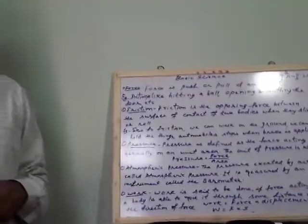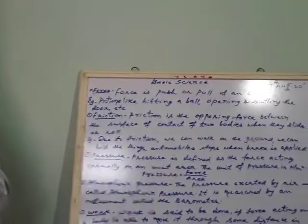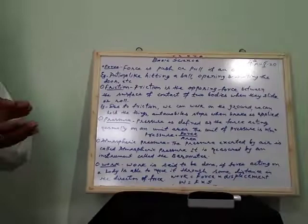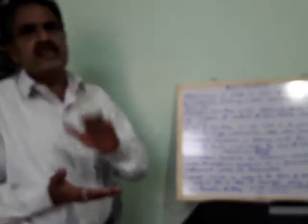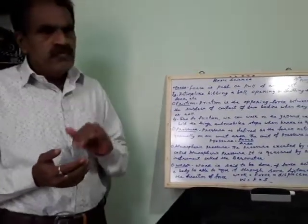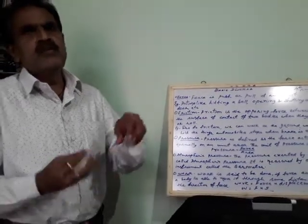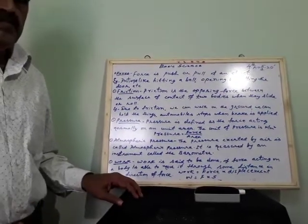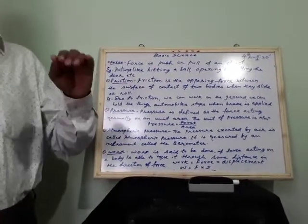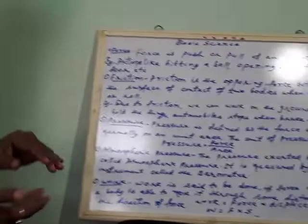There is one more word called friction. Friction is the opposing force between the surfaces of two bodies in contact when they slide or roll against each other. In simple words, friction is the opposing force when force is applied in the opposite direction. Due to friction we are able to walk on the ground — the force from the surface opposing our movement is called friction.